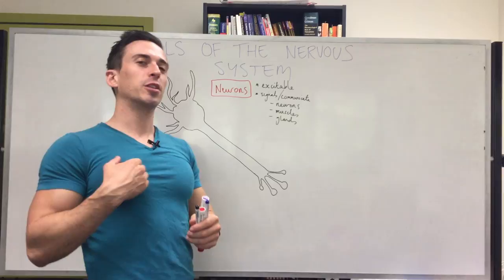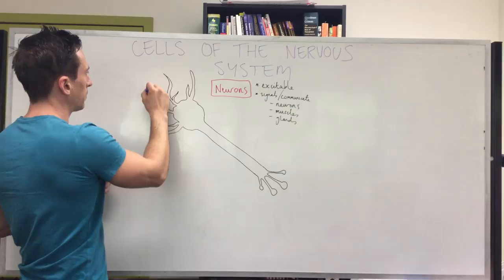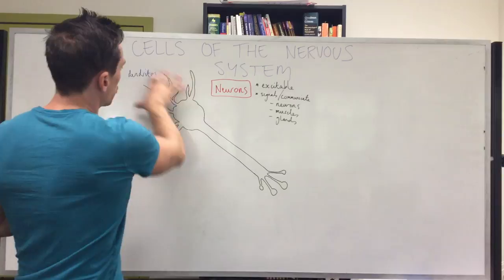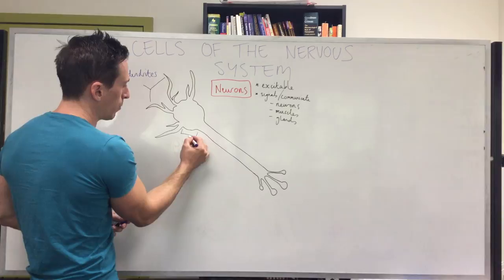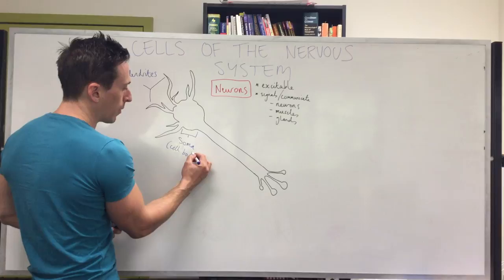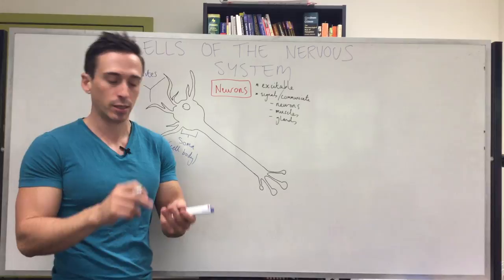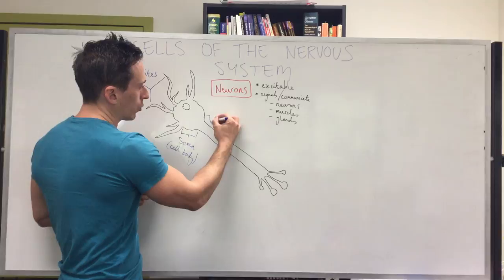Here is a picture of a neuron similar to what you may have seen in your textbook. A couple of things we need to identify: first, the projections you see at the end are called dendrites. What dendrites do is receive any incoming signals — maybe coming from another neuron or some sort of receptor. Then you've got the largest portion of the cell called the soma, which is the cell body. The soma contains a nucleus as well as all other organelles such as the Golgi apparatus, endoplasmic reticulum, ribosomes, and mitochondria.